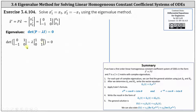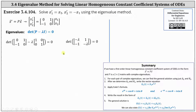Simplifying inside the parentheses, the result is the determinant of the two-by-two matrix where in the first row the entries are negative lambda and one, and the second row entries are negative one and negative lambda. Evaluating the determinant gives negative lambda times negative lambda minus one times negative one, which gives us lambda squared plus one equals zero.